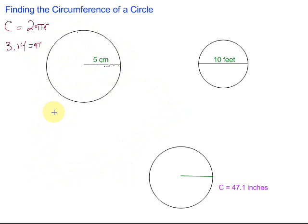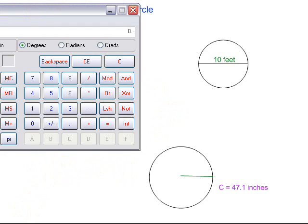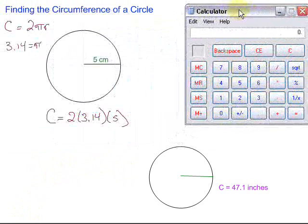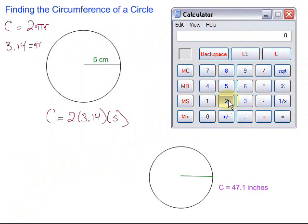So this circle we have C equals 2 times pi. Pi is 3.14 times the radius which is 5. We'll grab our calculator and we'll figure that out here. We have 2 times 3.14 times 5 which gives us 31.4.